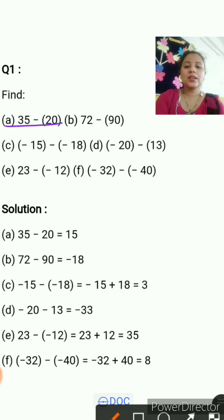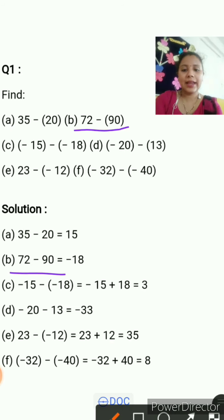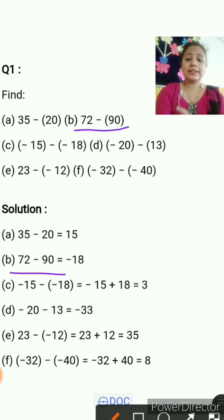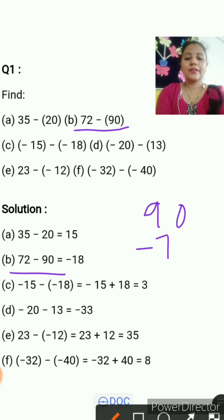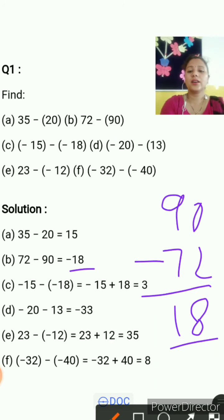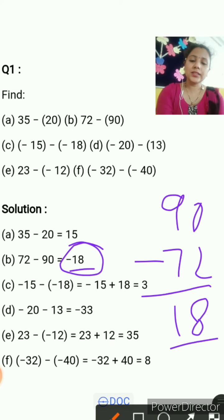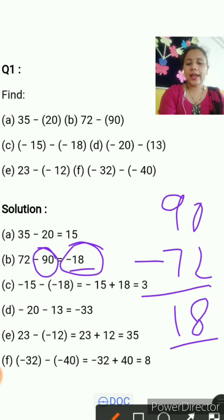Next is 72 minus 90. Here 72 is positive and 90 is negative — positive minus negative gives negative. We subtract 72 from 90: 90 minus 72 equals 18. But the answer is negative 18, because the greater digit, which is 90, is negative.